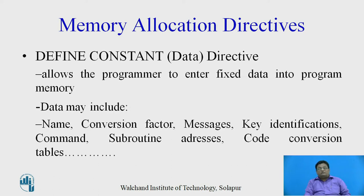Some directives are defined to allocate memory for data. These are called the define constant directives, and they are used to define the memory space for data. These directives allow the programmer to enter fixed data into program memory. This data may include names, conversion factors, messages, key identifications, commands, subroutine addresses, code conversion tables, etc.